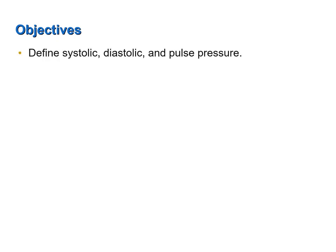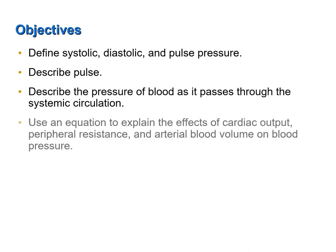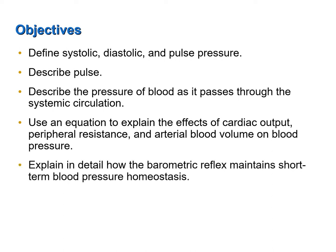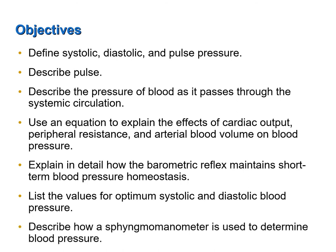This screencast was designed to help you achieve the following objectives: define systolic, diastolic, and pulse pressure; describe pulse; describe the pressure of blood as it passes through the systemic circulation; use an equation to explain the effects of cardiac output, peripheral resistance, and arterial blood volume on blood pressure; explain in detail how the baroreceptor reflex maintains short-term blood pressure homeostasis; list the values for optimum systolic and diastolic blood pressure; and describe how a sphygmomanometer is used to determine blood pressure.